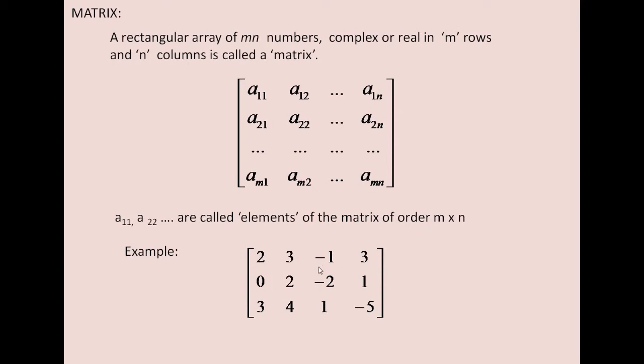Now you see the elements of this matrix are 2, 3, minus 1, 3 in the first row, 0, 2, minus 2, 1 in the second row, 3, 4, 1 and minus 5 in the third row.